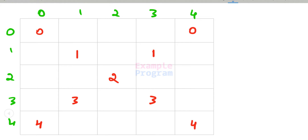The next thing we have to figure out is for a particular row, in which columns we have to display the numbers. If we look at this pattern, for every row we are printing the row number in whatever columns we have to print. For example, in the 0th row we are displaying 0, which is the row number, in columns 0 and 4. In the 3rd row, the row number 3 is displayed in columns 1 and 3.